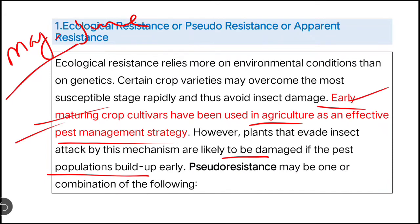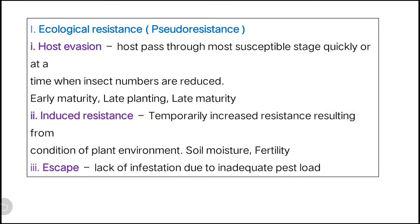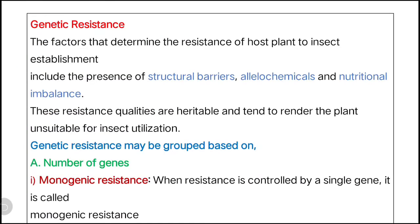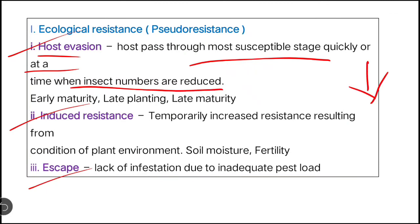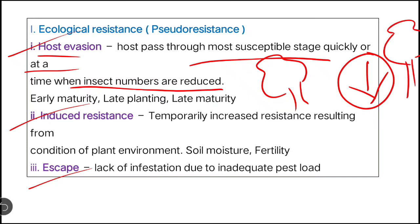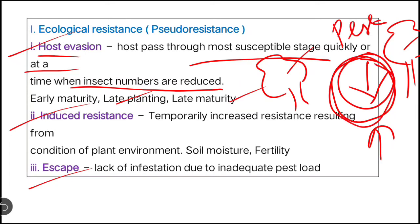Pseudo-resistance may be one or a combination of the following. First is host evasion: the host passes through its most susceptible stage quickly at a time when insect numbers are low. By using early maturity or late maturity planting dates, the crop avoids the stage when pest population is highest. This is known as host evasion.